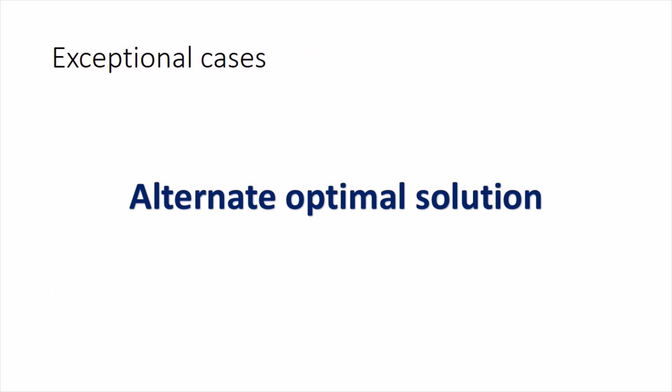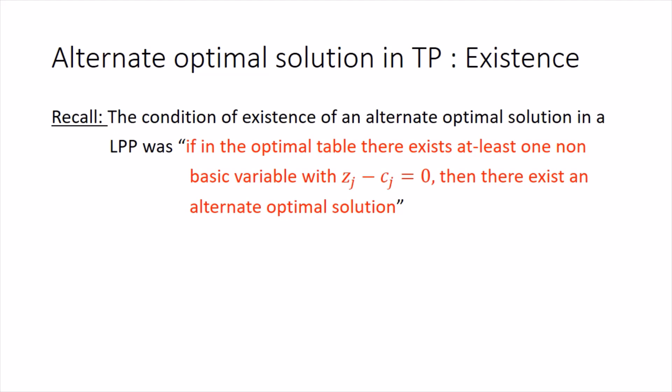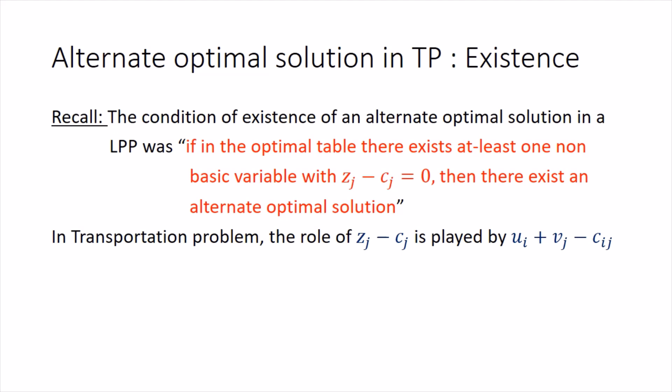First, let's explore alternate optimal solution. As should be clear from the name, this situation arises when we have already obtained an optimal solution and the question is whether there exists an alternate optimal solution. We recall that in the simplex method applied on LPP, if the optimal table contains at least one non-basic variable with Zj minus Cj equals zero, then there exists an alternate optimal solution.